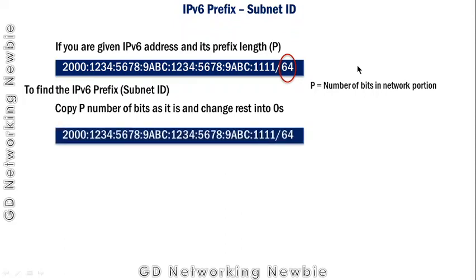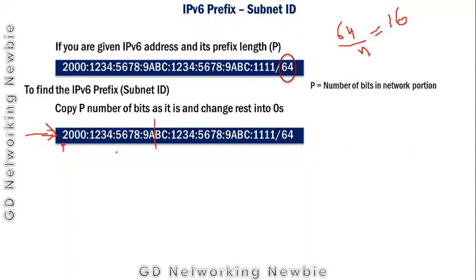In this IPv6 address, with respect to the prefix length value, we have to count 64 bits. Remember the IPv6 address is given in hexadecimal digits, and one hexadecimal digit is 4 bits. So to count 64 bits in hexadecimal: 64 divided by 4 equals 16 — meaning we need 16 hexadecimal digits. Counting: 1, 2, 4, 8, 12, 13, 14, 16 — up to this point.